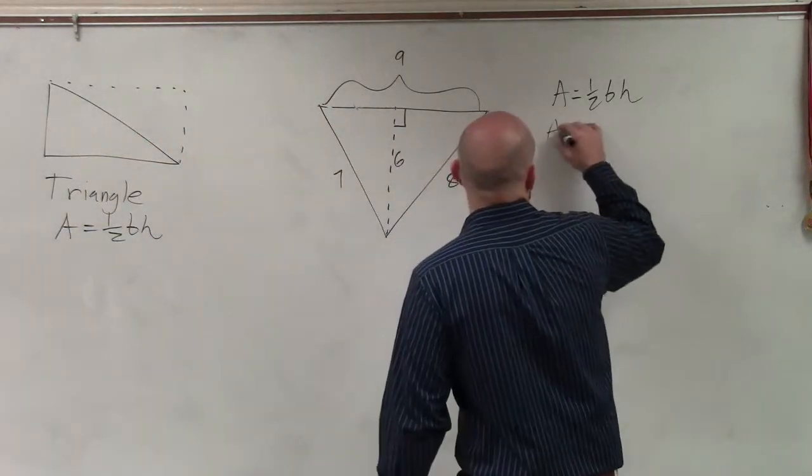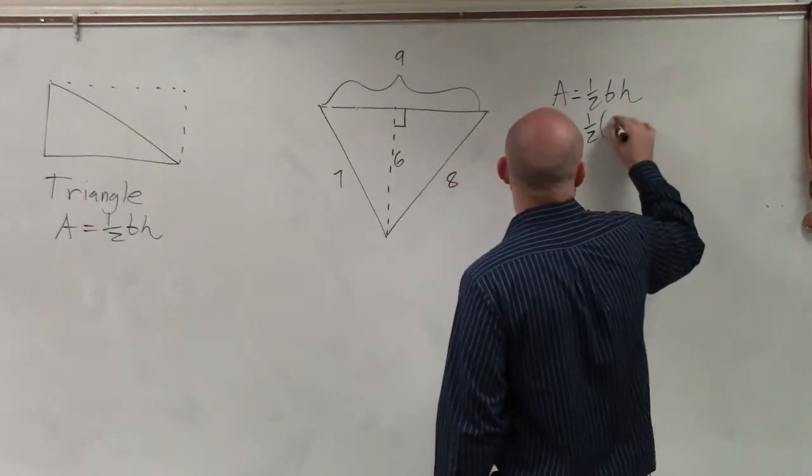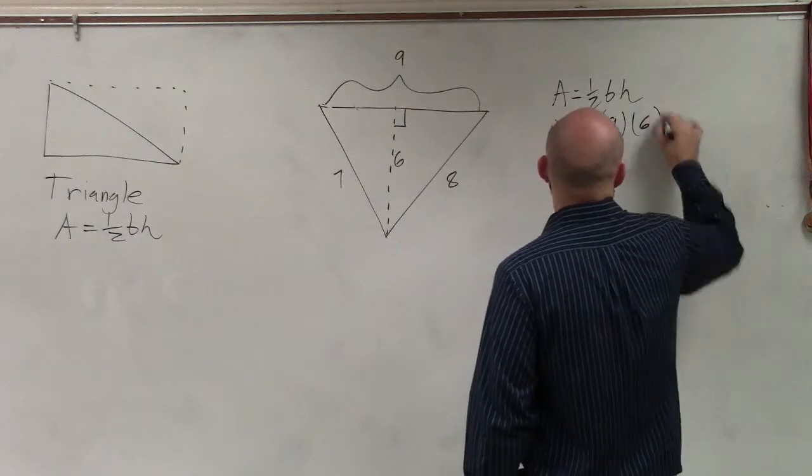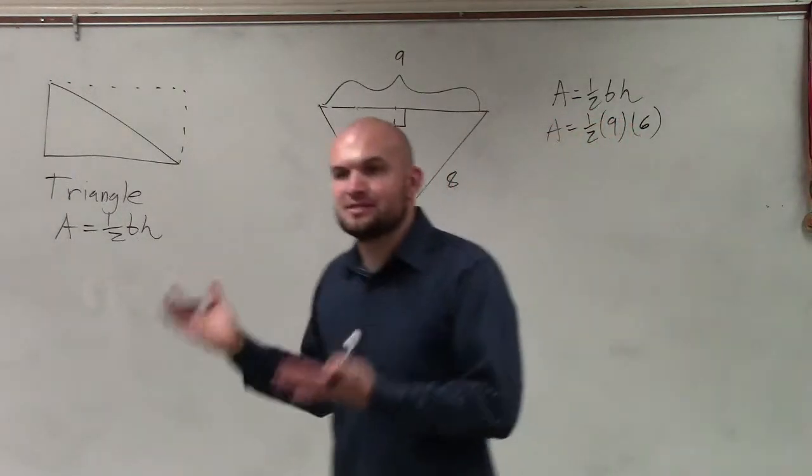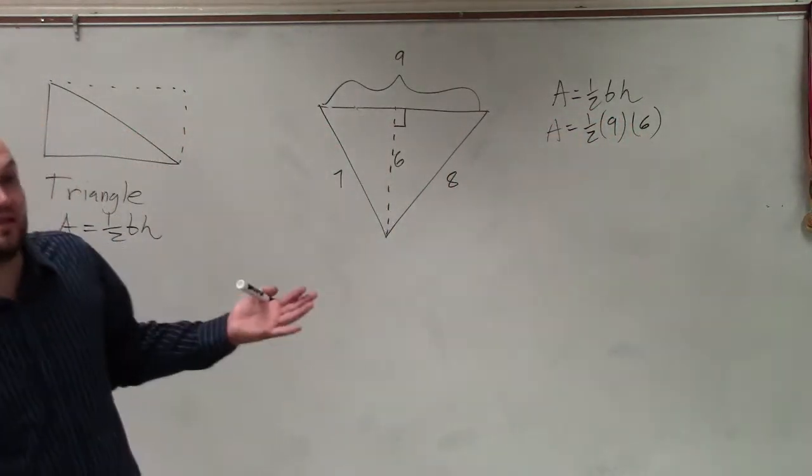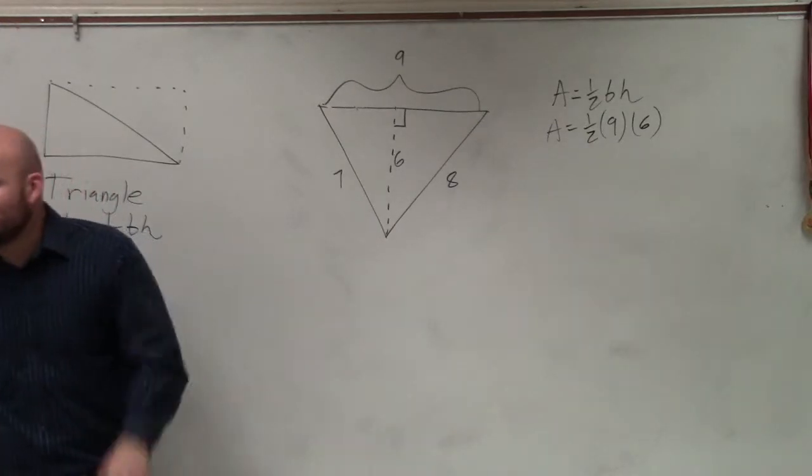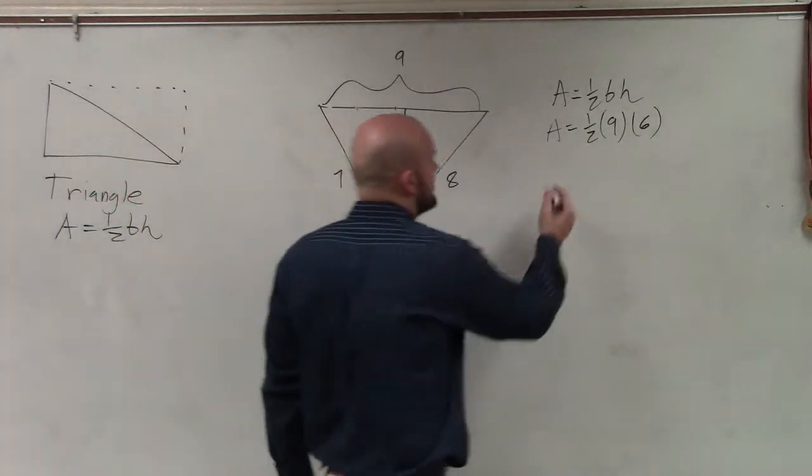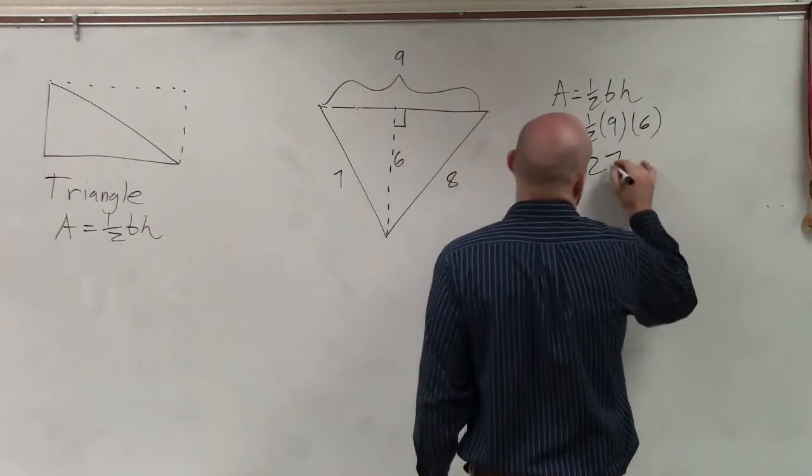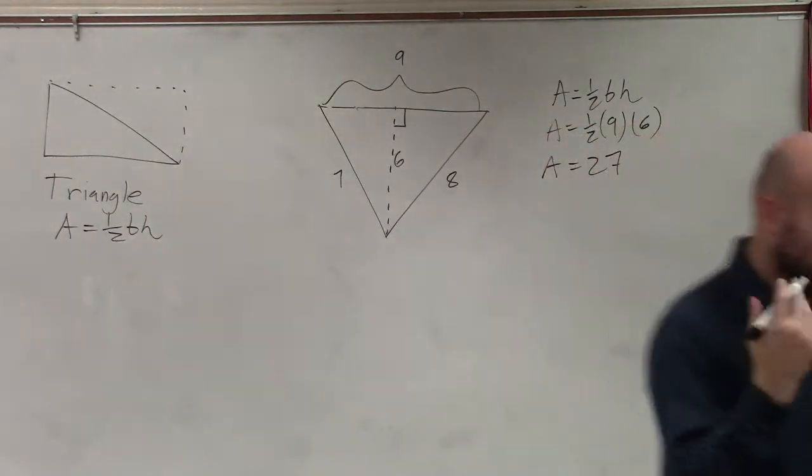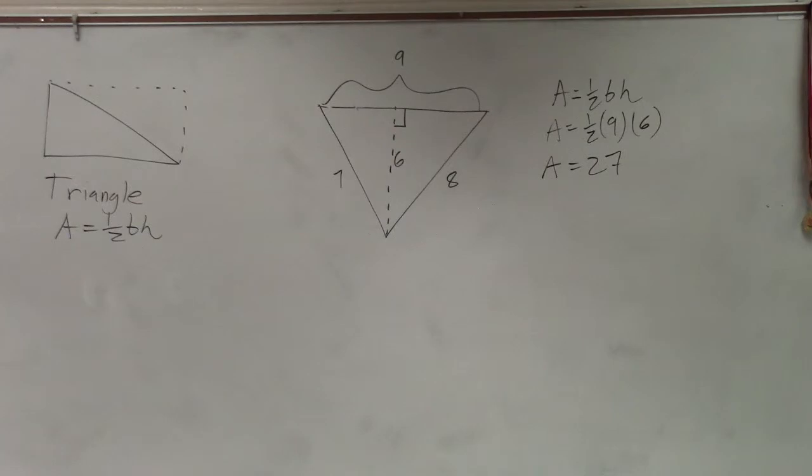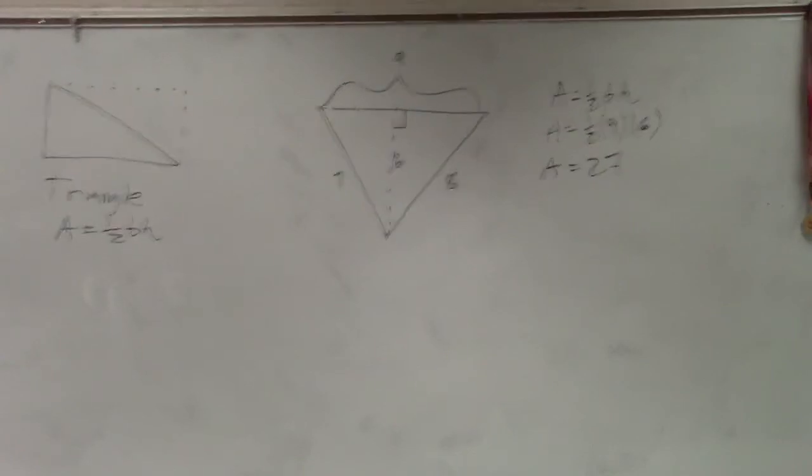And now we can just multiply nine times six. It's going to be 54. Divide by two is going to be... Oh wait, so you're dividing by two or not? You don't have to divide. Multiplying by one half is the same thing as dividing by two. Oh, yes.